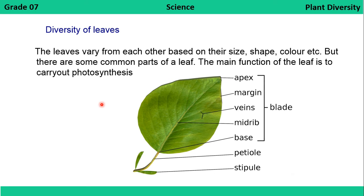Leaves of the plant also differ from each other in size, shape, and colour, but some parts are common to all leaves. As seen in the diagram of a leaf, you can see the stipule, the petiole, the base of the leaf, the midrib, and veins starting from the midrib going towards the margin of the leaf blade. The margin is the edge of the leaf and the apex is the tip of the leaf. All these together form the leaf blade.